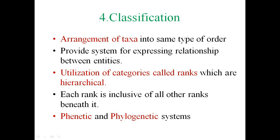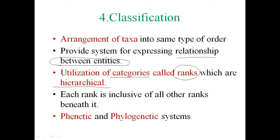The next and last step for systematic study is the classification of plants. Arrangement of taxa in the same type of order is classification, and this gives a relationship between entities or plants. For that, categories called ranks are used. These ranks are arranged hierarchically — from family, then genus, species, and so on — and each rank is inclusive of all other ranks beneath it.